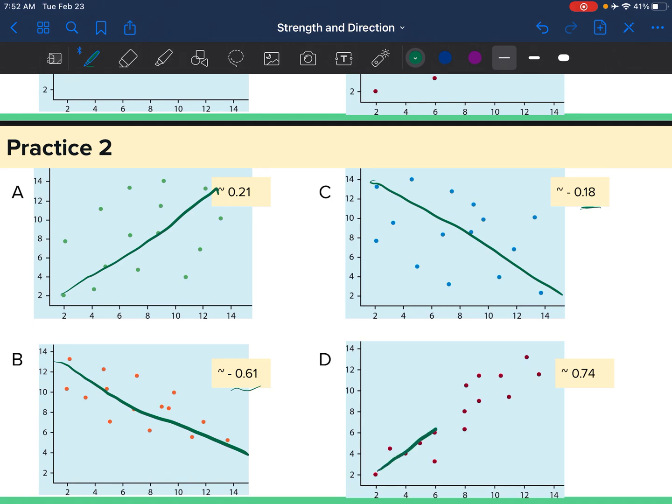And my last one, I have D. These points are getting tighter. They're getting closer to that line. And it is positive. So we have 0.74.